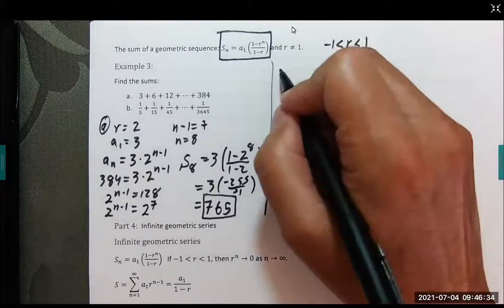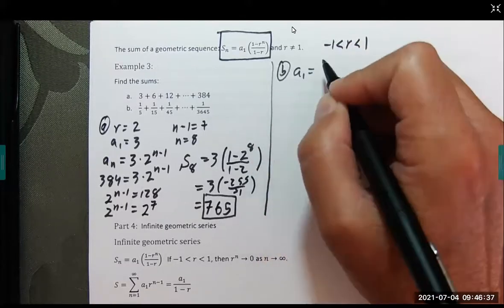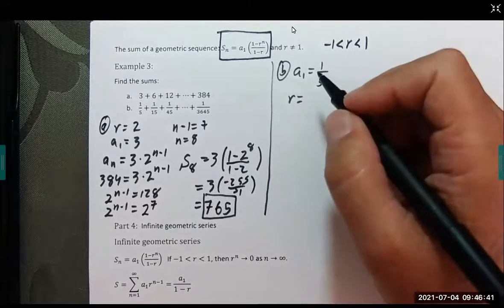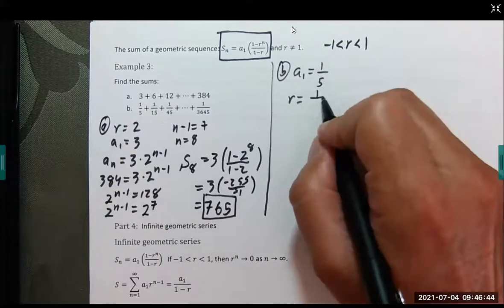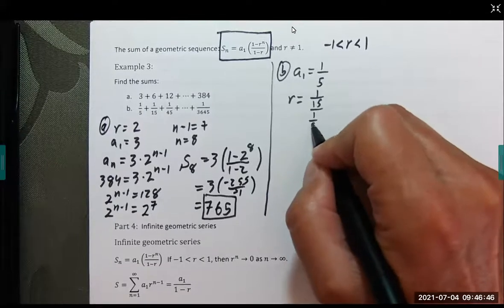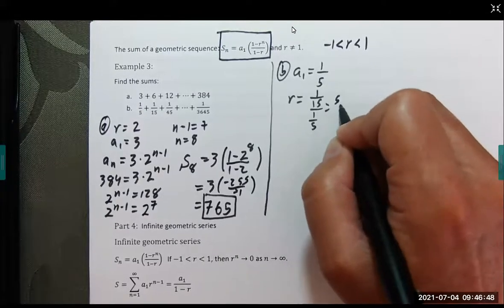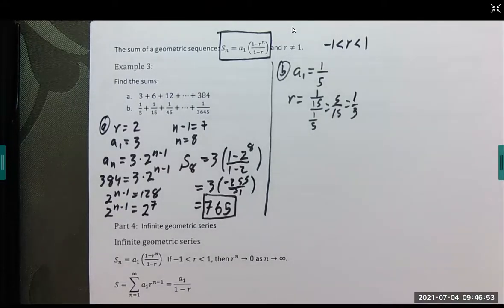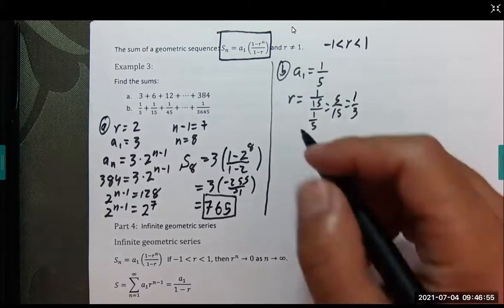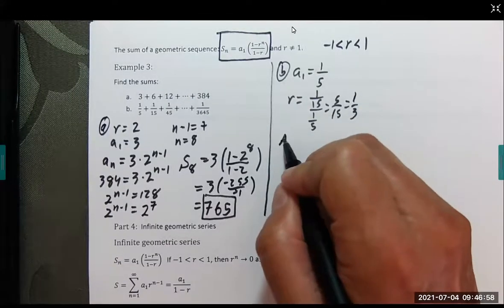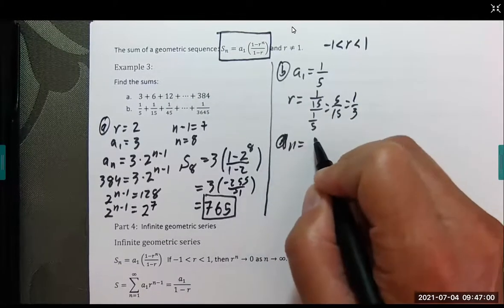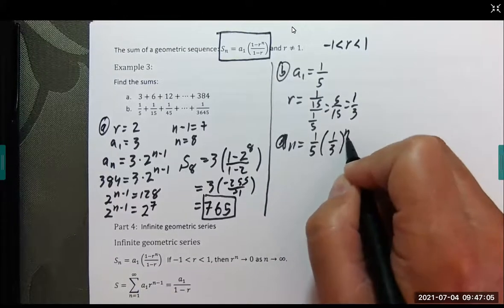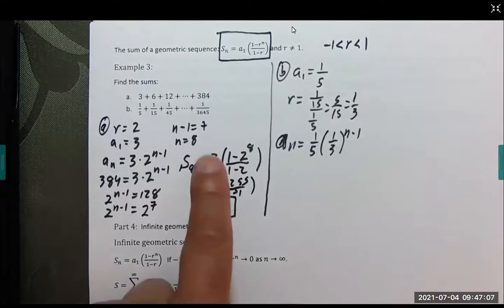Let's do Part B. A sub 1 is 1/5. R is 1/15 divided by 1/5, which becomes 5 over 15, which is 1/3. What we have is a sub n equals 1/5 times (1/3) raised to the n minus 1 power. Our last term is here.